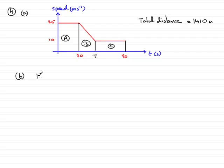So we'll start with that as 1,410 equals now the area of A, which is going to be the area of a rectangle, so that's going to be 25 times 30. So I'll put that down there, and then plus the area of B. Now, B is a trapezium, it's got two parallel sides, and the formula for the area of a trapezium is the sum of the parallel sides times the distance apart divided by 2.